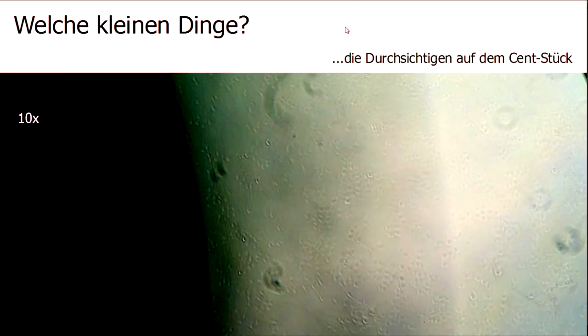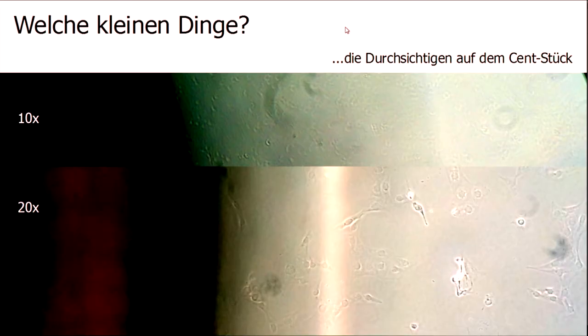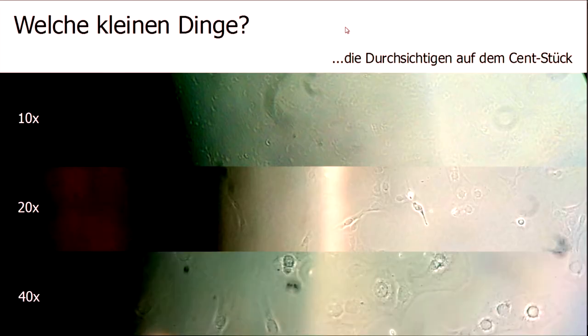The first picture you get looks like that. If you look a little bit on the right-hand side, there are some little structures. On the left-hand side, you can see the shapes from the sand piece — so a feeling for the size. If I zoom in to 20x, you can see a little bit more of the cells, and at 40x, you can see the cores of the cells and also the cell periphery.